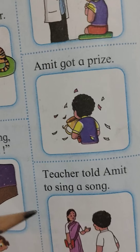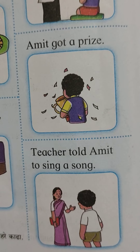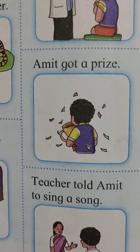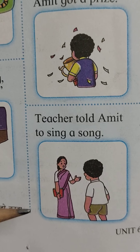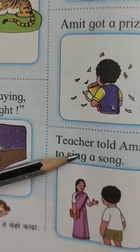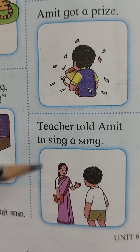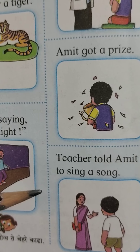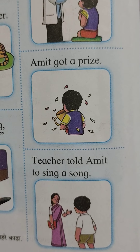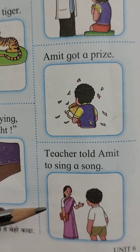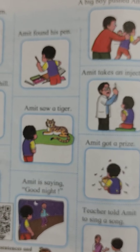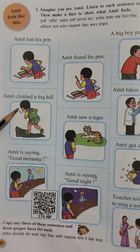Teacher told Amit to sing a song. So students, when your teacher says to do something — dance, songs, gaan manaya saati saangthe, kiva dance karanaya saati saangthe — many things teachers tell you. In the same way, Amit's teacher told him to sing a song. 'To sing' means 'gaane,' 'song' means 'gaan.' Teacher told Amit to sing a song. Jara aaplela teacher na kaayitri saangthe, aapan jara nervous ho to — we are a little afraid. We can feel shy or nervous, or also happy in this picture. So you can feel happy also. These are the different feelings we can see from this lesson — Amit feels like this.